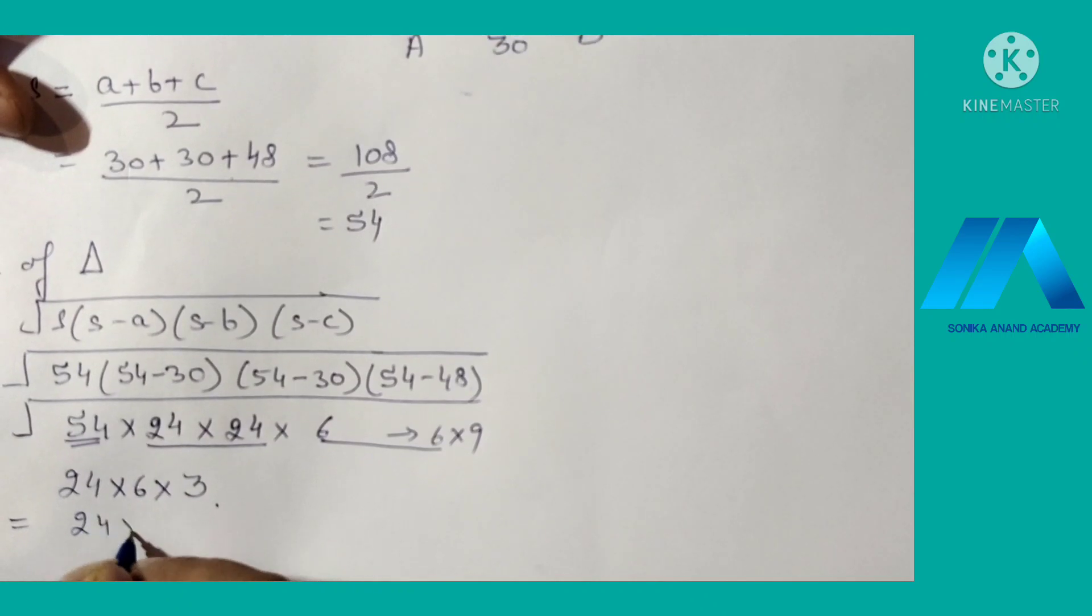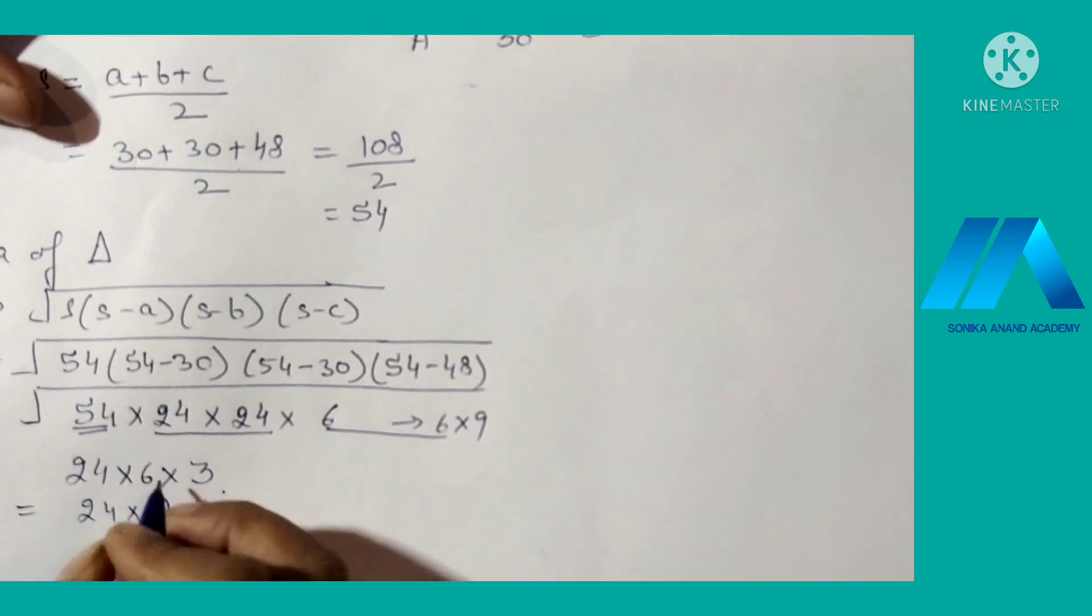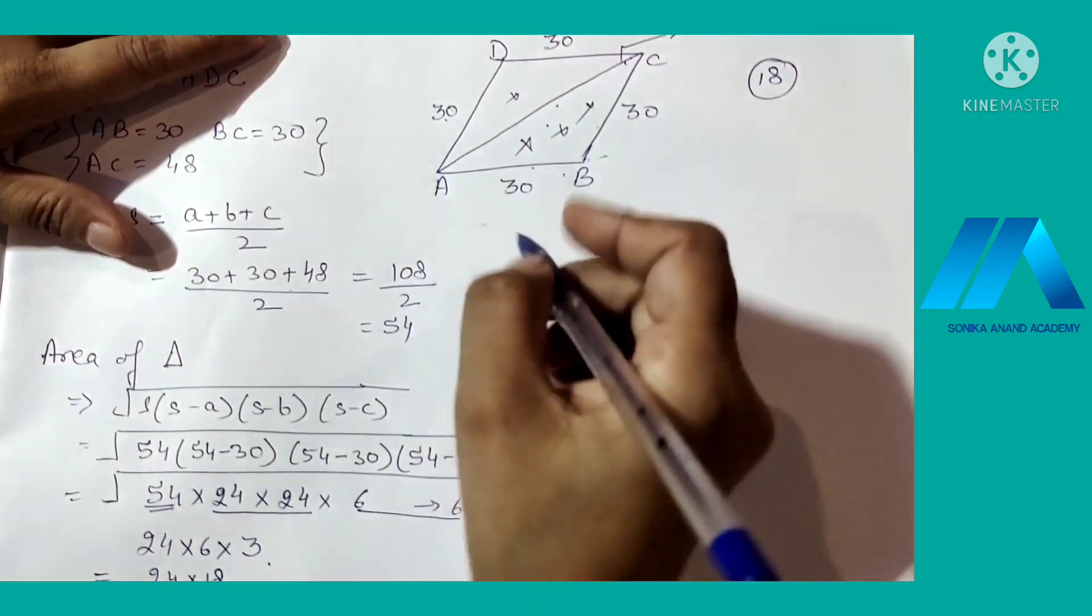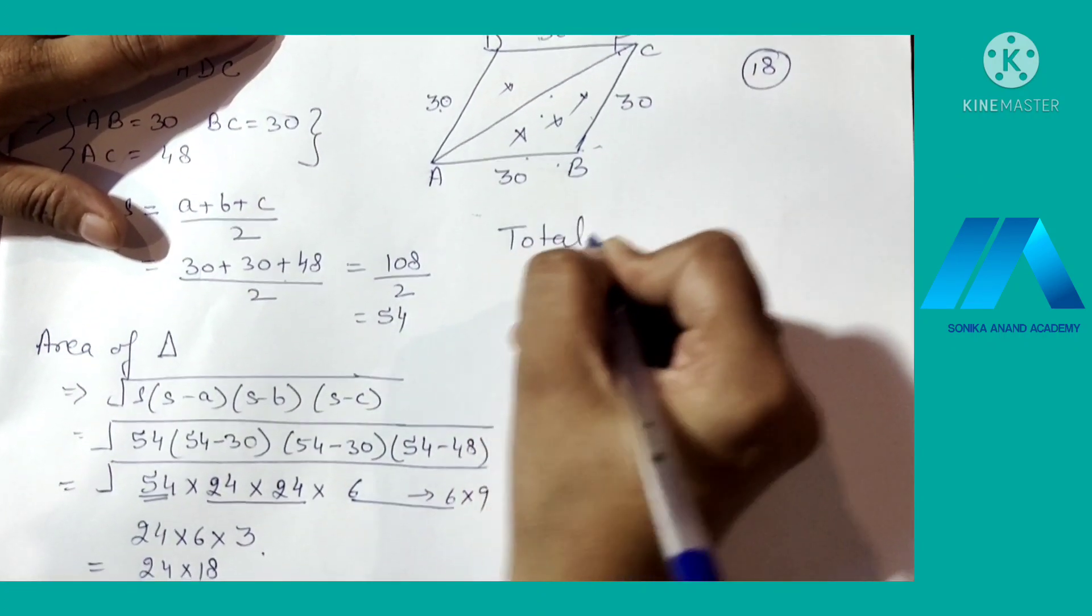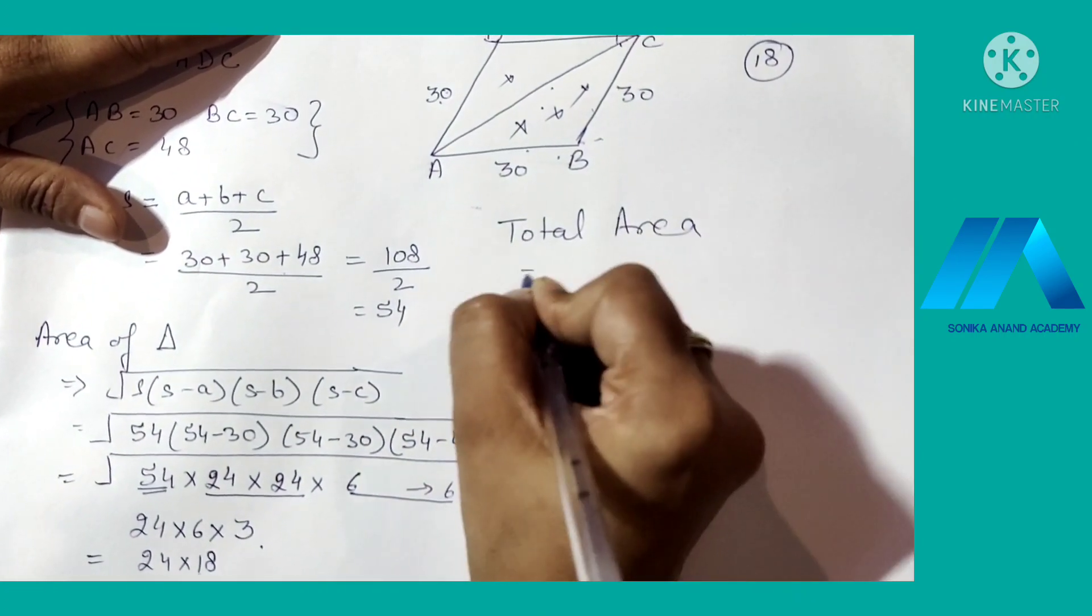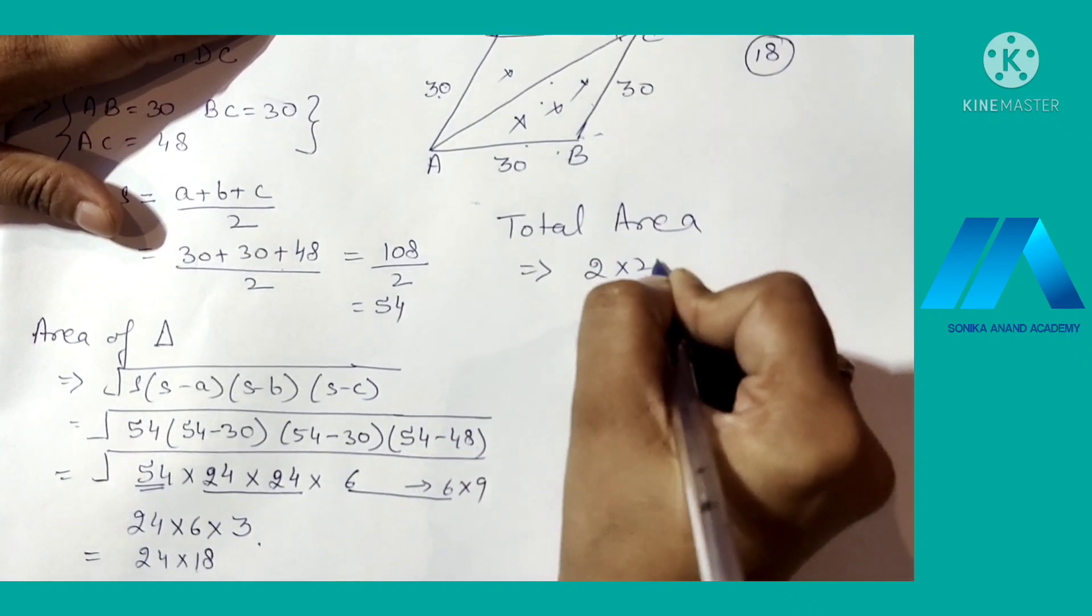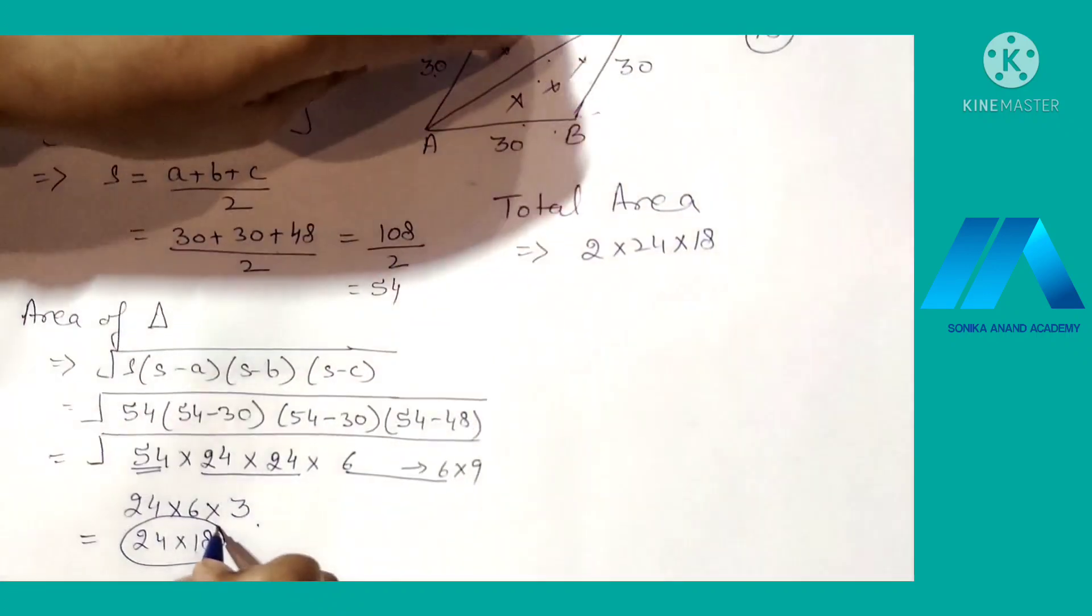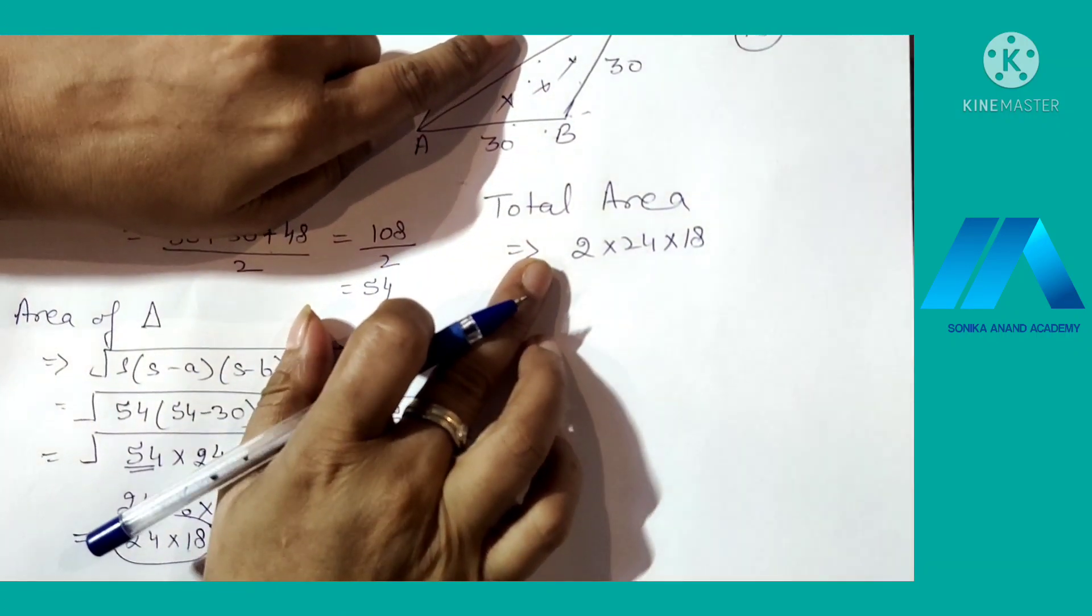Now multiplying, we get 24 times 60, that is 80. This is the area of this triangle. Now area of another triangle, that means total area. Total area: you will multiply all of them, 2 into 24 into 18, because this is the area of one triangle and area of second triangle you have to multiply by 2.